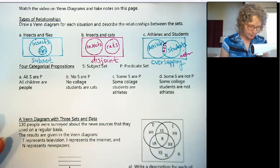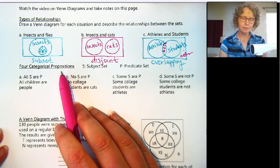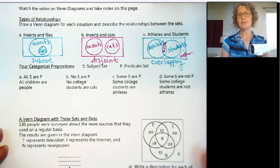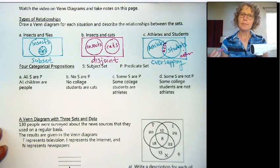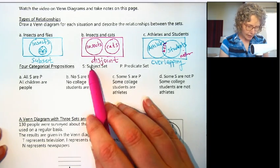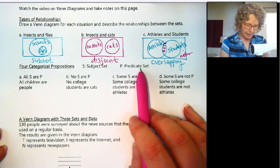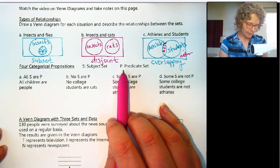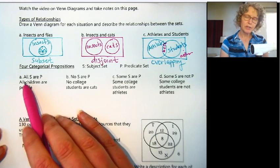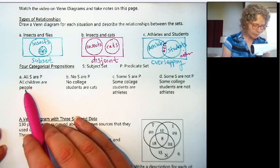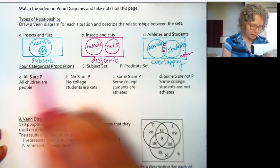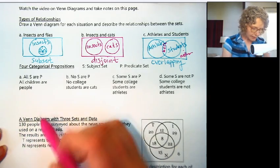The next part, we're going to go back to talking about propositions — specifically four different categorical propositions, meaning they're talking about categories. We have two different sets: a subject set and a predicate set, called S and P. One example is 'all children are people.' The statement is 'all S are P.' So all children are people. Let's draw this out.